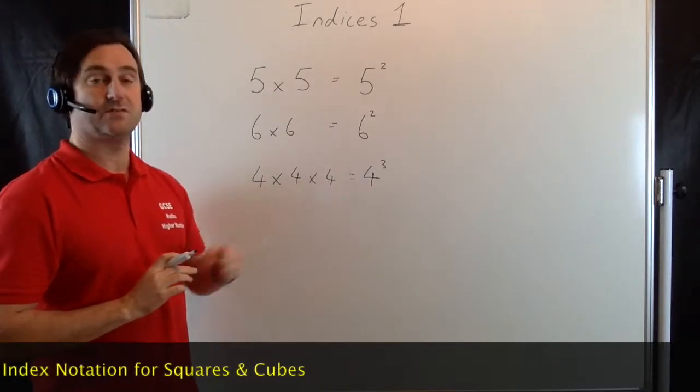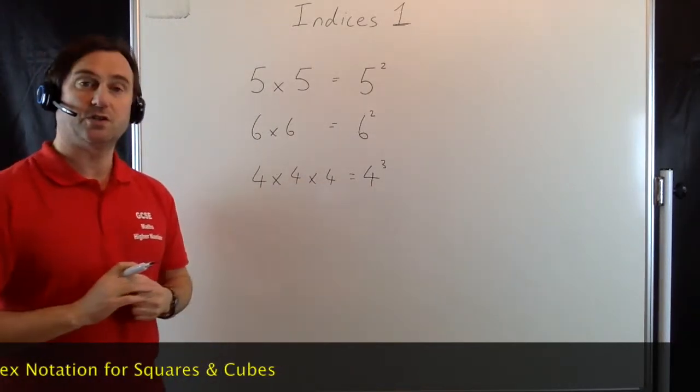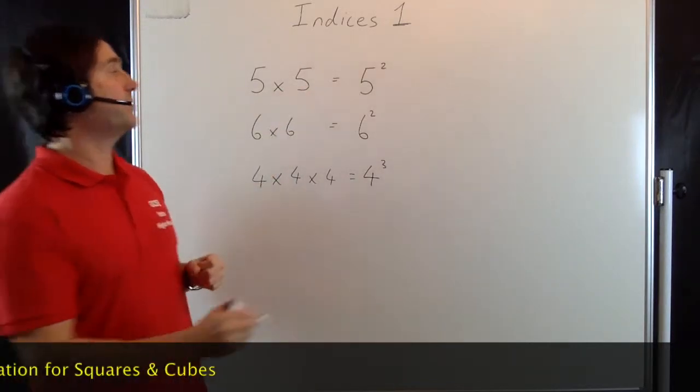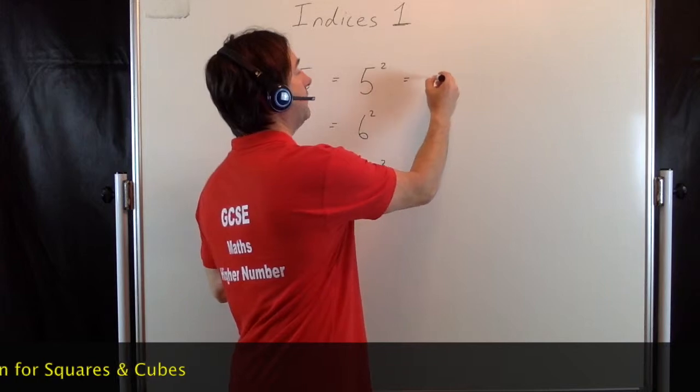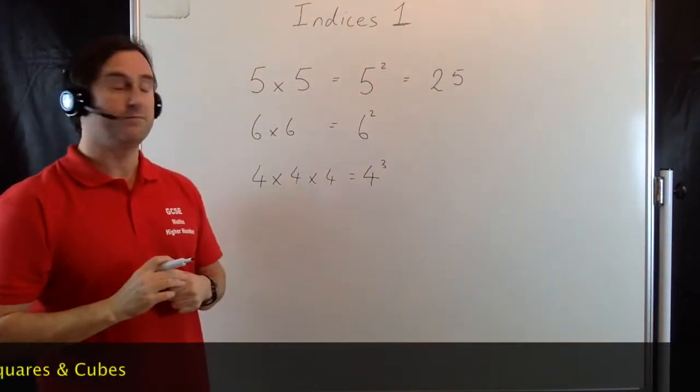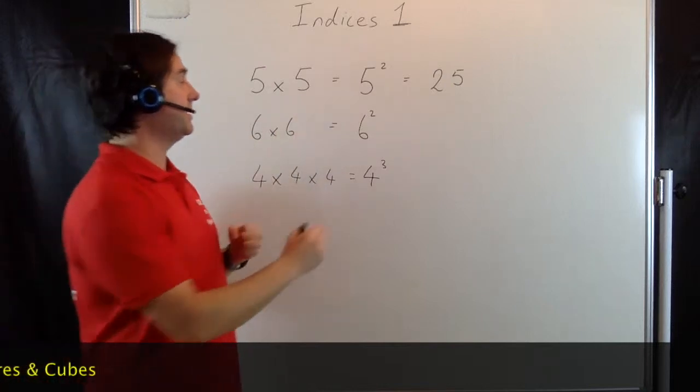We could then obviously work these out. 5 squared would give you 5 × 5 which gives you a value of 25, and the value of 6 squared we know is 6 × 6, that gives you a value of 36.